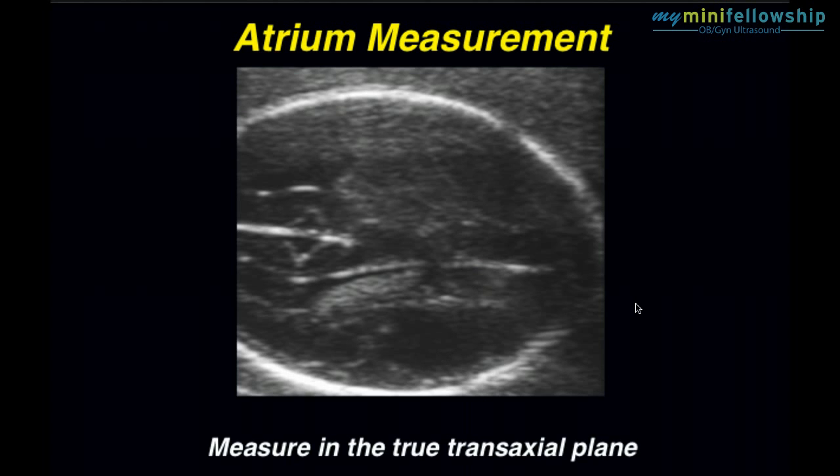How do we know we are making our measurement in the true transverse axial plane? Well, we run into a problem here with in utero sonography because near field reverberation artifact causes us to be unable to compare symmetry of the brain as our certainty that we are looking at a true transaxial plane. Therefore, we must look at symmetry of the calvaria. The more perfectly symmetric the calvaria, the more certain we are that we are looking at a true transaxial plane.